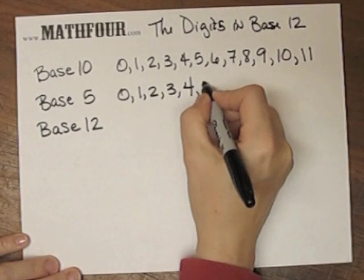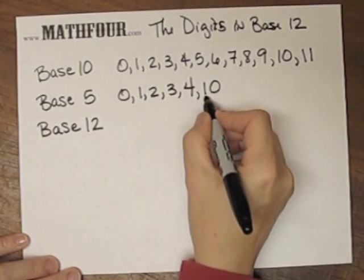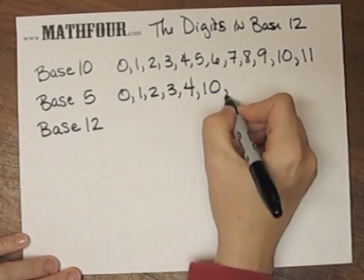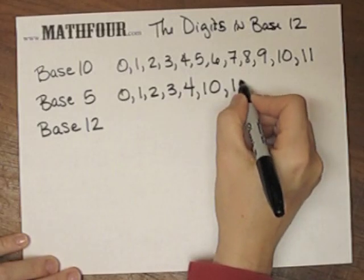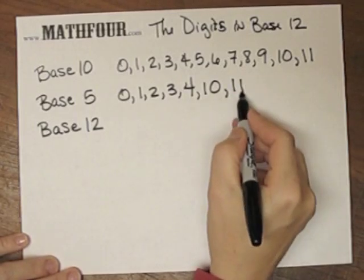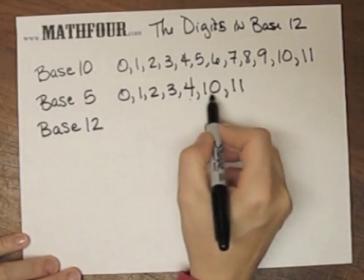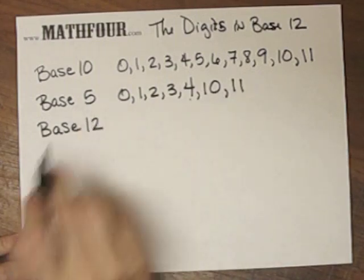Base 5, we can continue this, 1 set of 5 and 0 ones, 1 set of 5 and a single, which is a 6. So for us this would mean 5 and 6 in base 5 arithmetic.